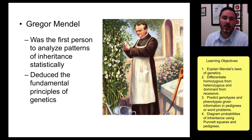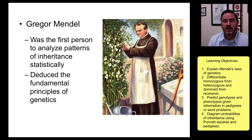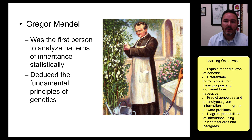Gregor Mendel was really the first person to analyze in a very systematic and methodological way the inheritance patterns, and he used pea plants and bean plants to do this, but mostly we're familiar with the pea plants.